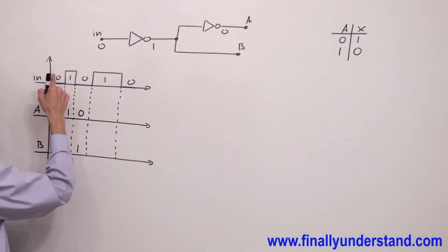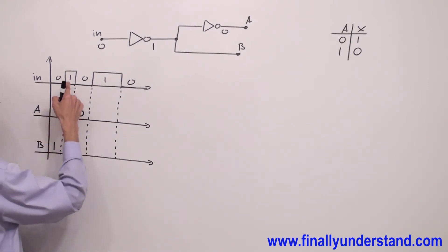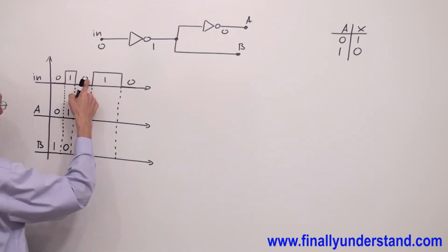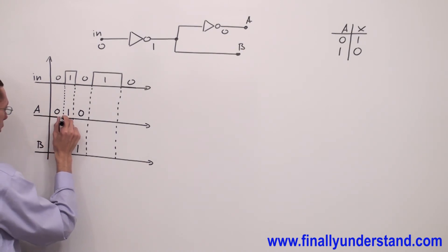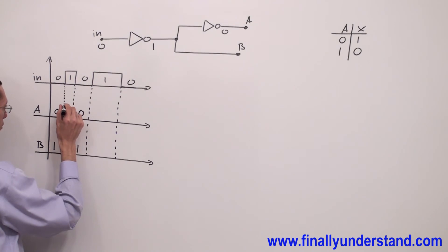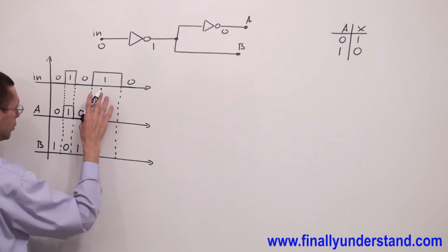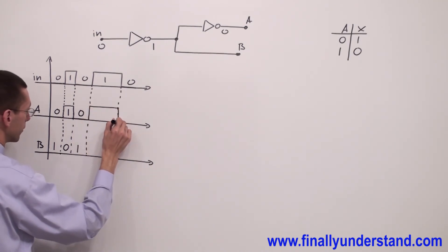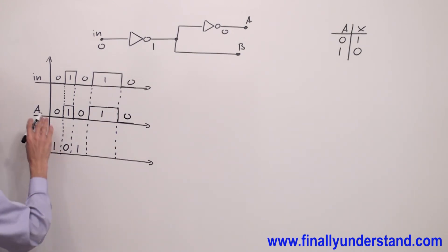Now let's take a look at the input waveform and the waveform at point A. We have zero at the input and zero at point A; we have high at the input and high at point A; we have zero at the input and zero at point A. So point A is going to have exactly the same waveform as the input. That's why we just simply copy the input waveform at this axis.